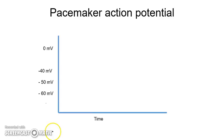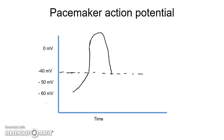Now moving to the pacemaker action potential. Pacemaker cells don't have a stable resting membrane potential. The threshold for firing an action potential is around minus 40 millivolts. When depolarization reaches this threshold, an action potential fires. As it repolarizes, it comes back to around minus 60 millivolts — called the maximum depolarization point. From there, the membrane gradually depolarizes again toward the threshold.